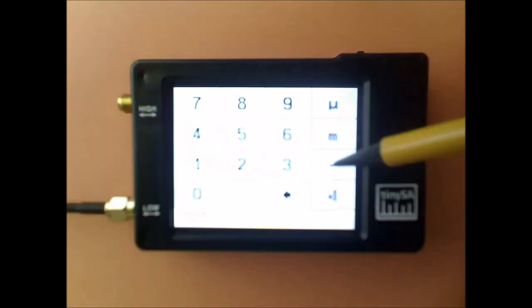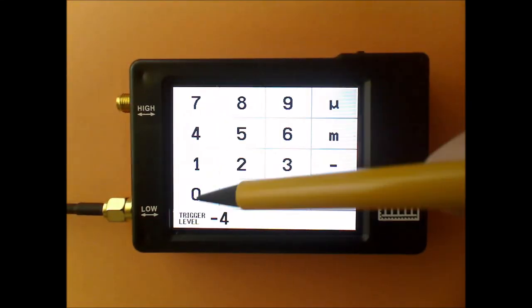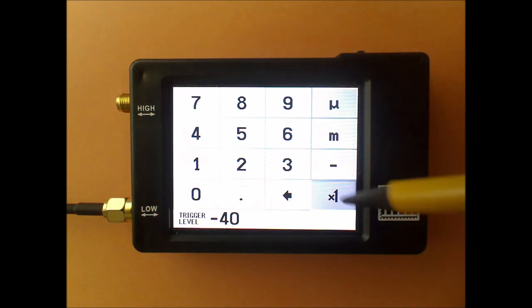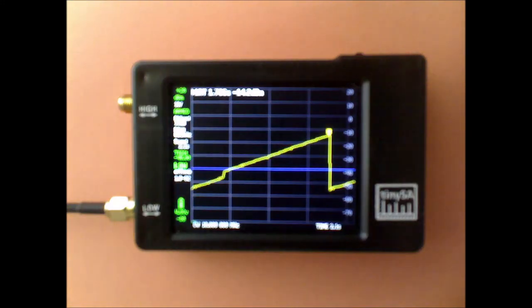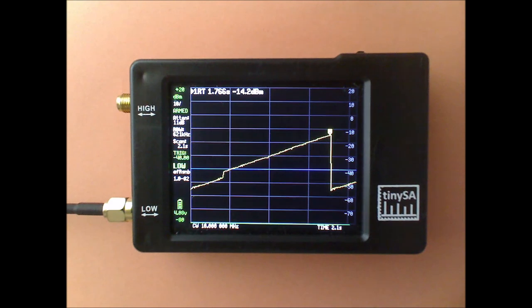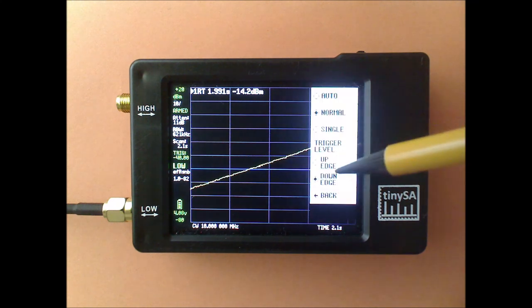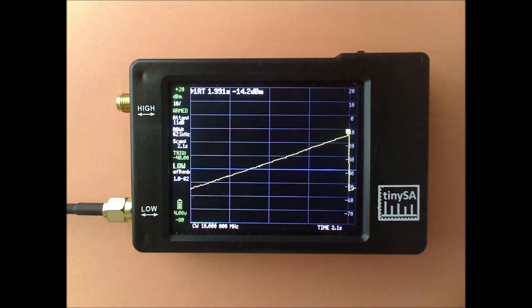But if I set the trigger level for instance to minus 40, this is the down edge and this is the up edge.